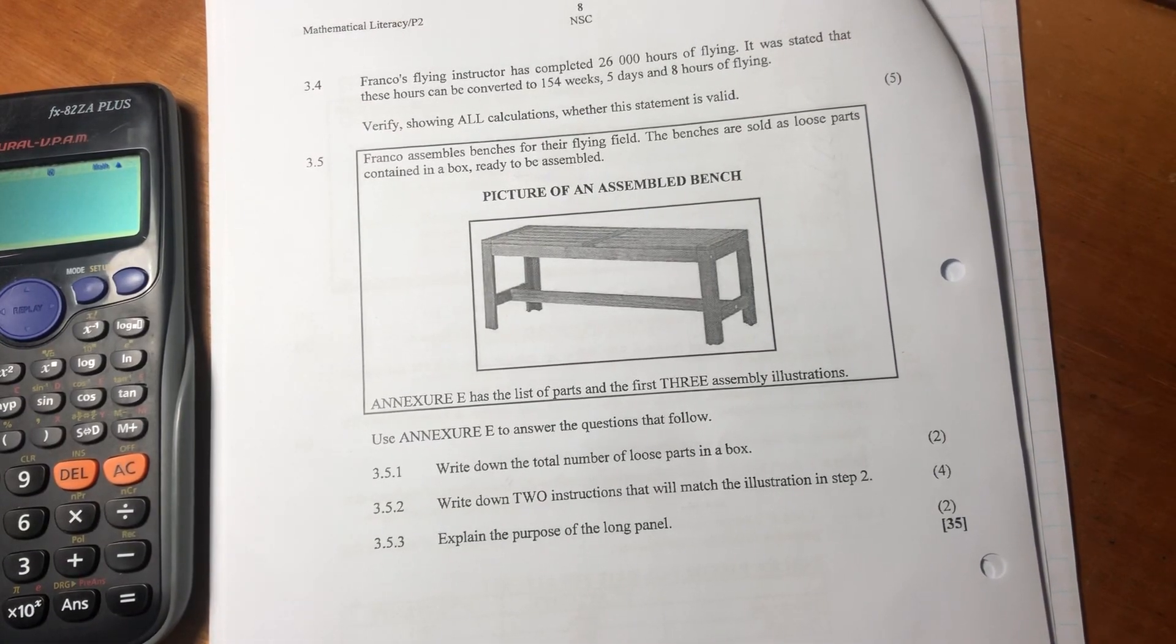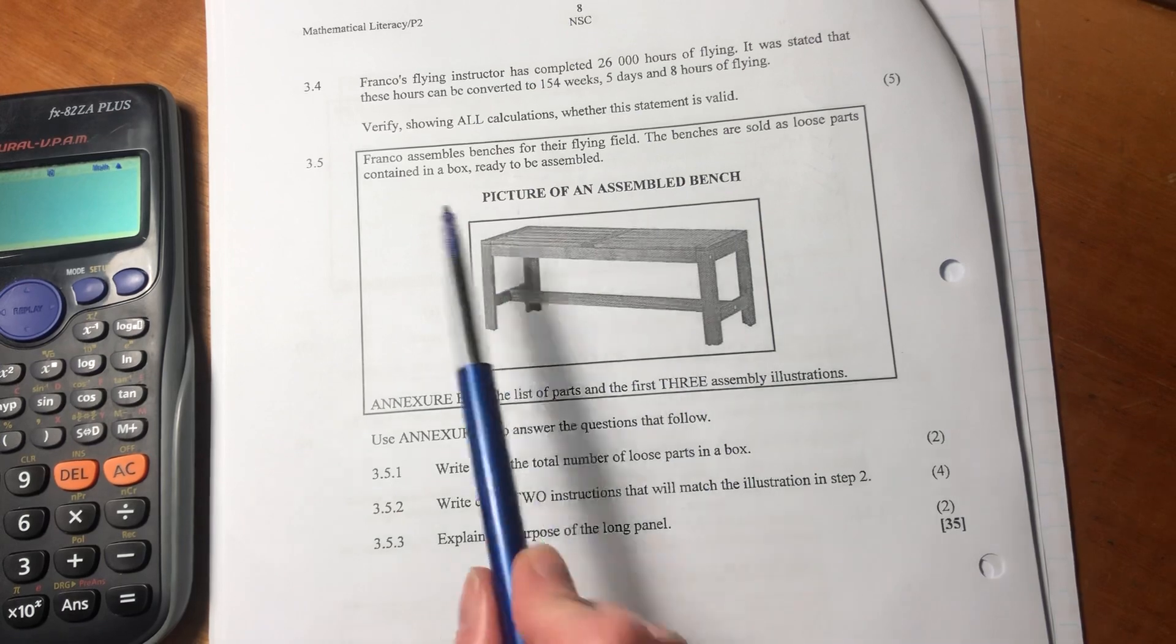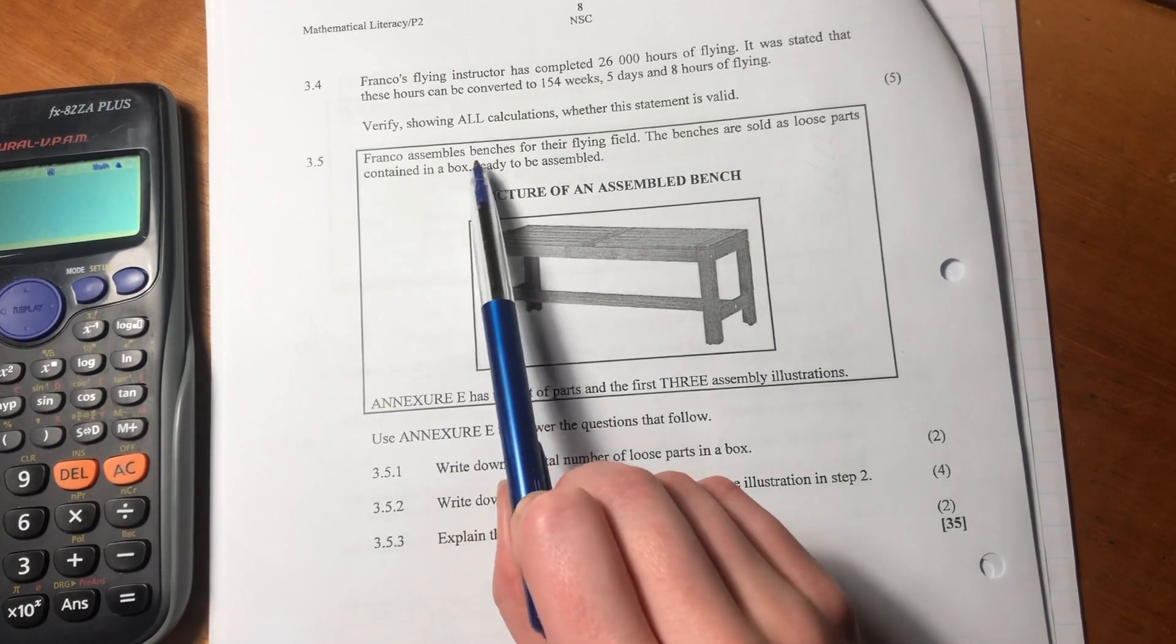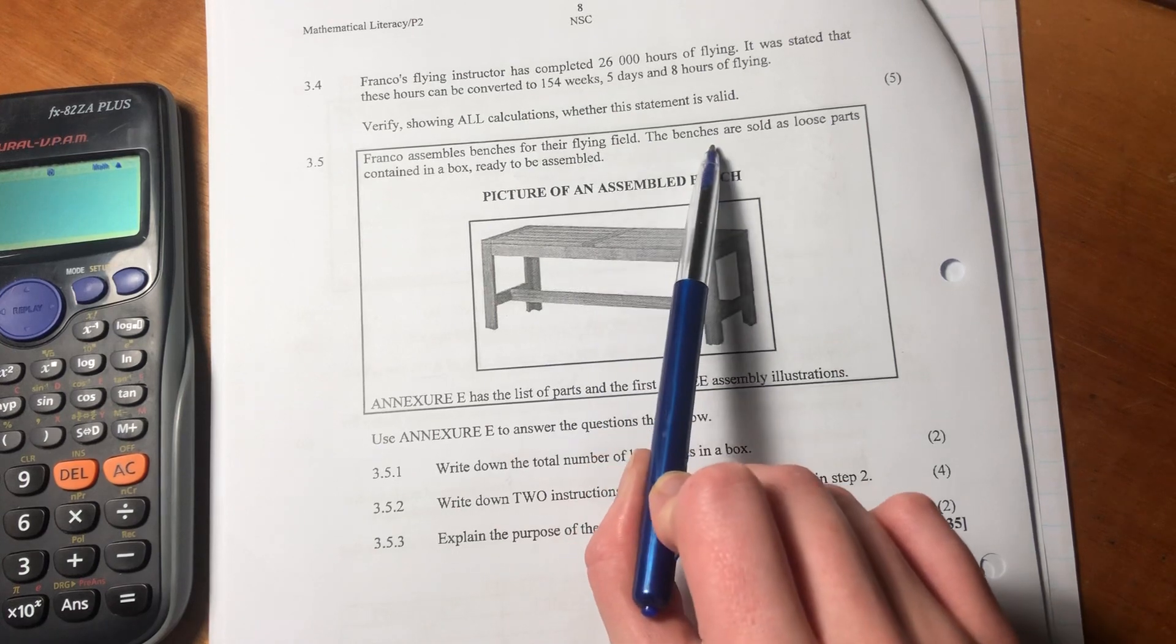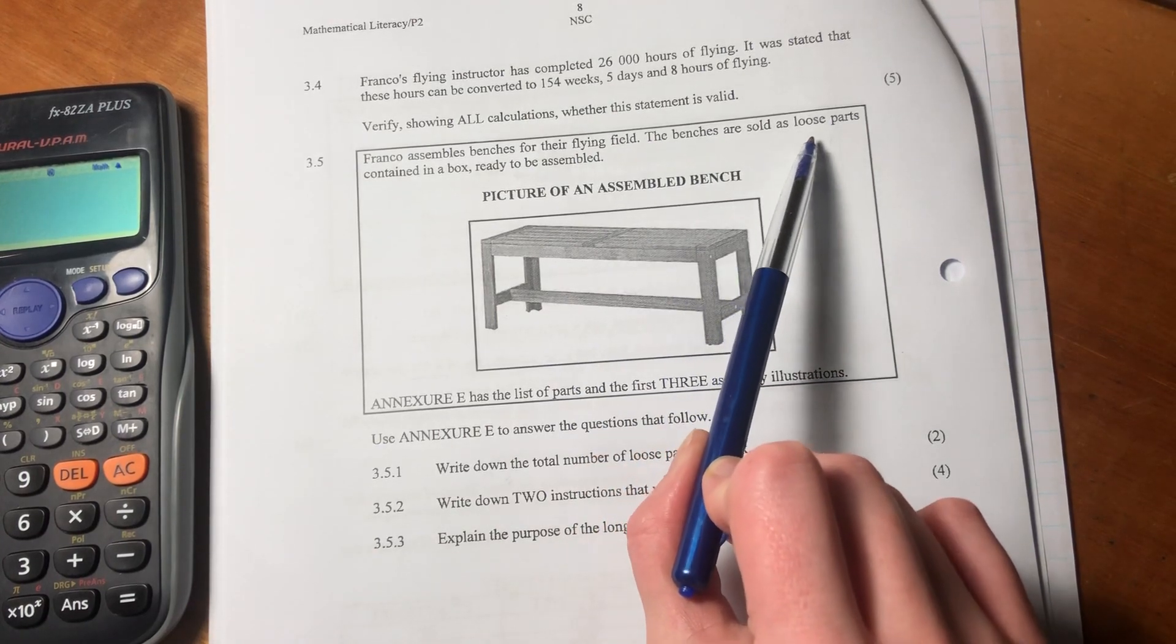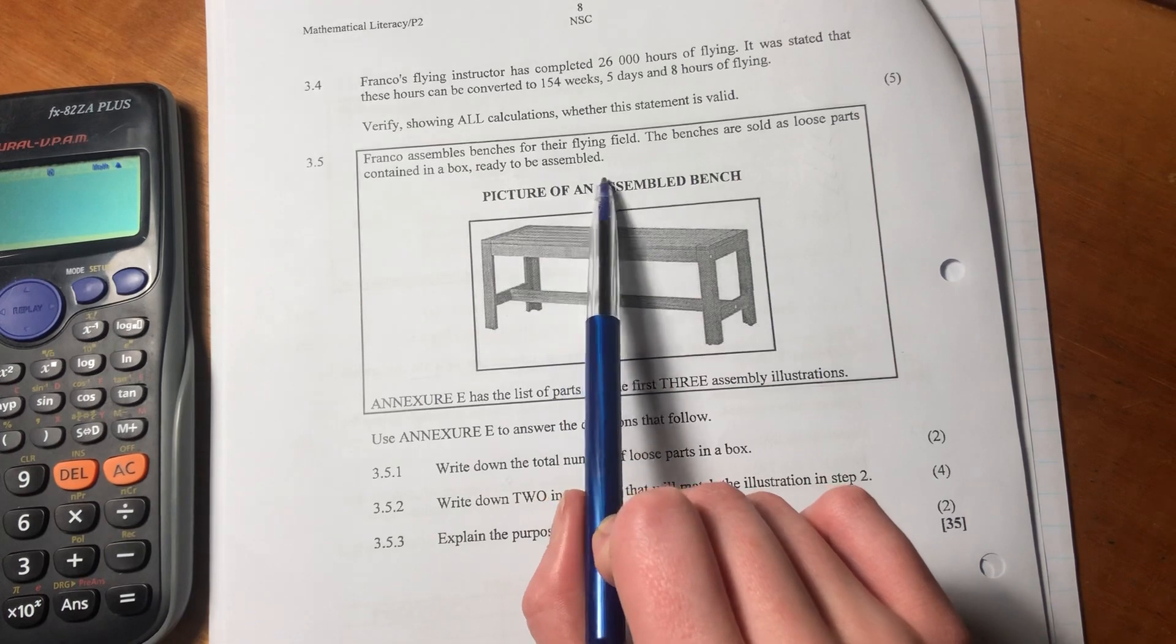So we are moving on to 3.5. 3.5 says Franco assembles benches for their flying field. The benches are sold as loose parts contained in a box ready to assemble.